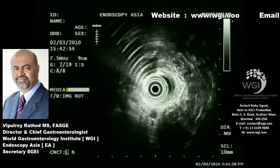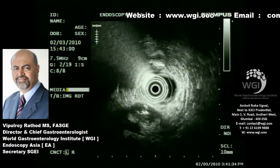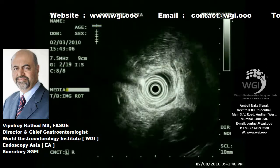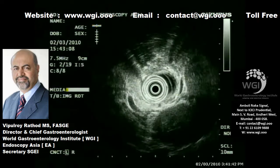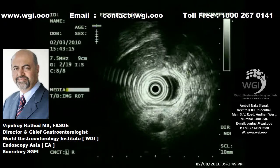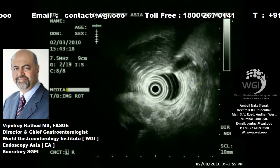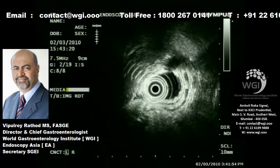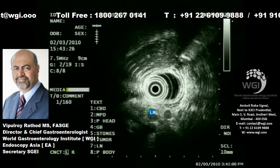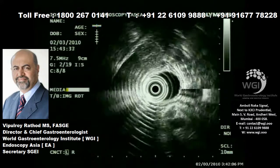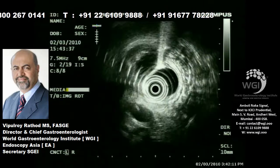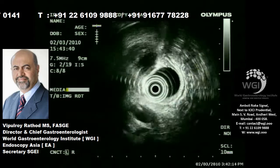You can see here a dilated pancreatic duct; my scope is now in the stomach, and we scan the entire body and the tail of the pancreas from the stomach. You can see multiple hypoechoic nodes in the celiac artery area. These are lymph nodes which are far away from the primary site, and this will have significant impact on the treatment design of these patients.